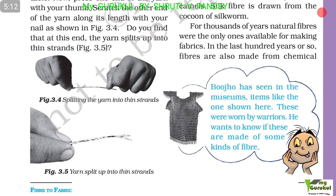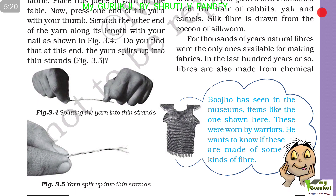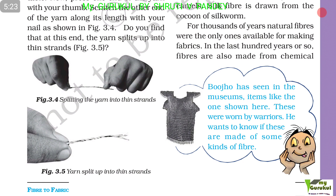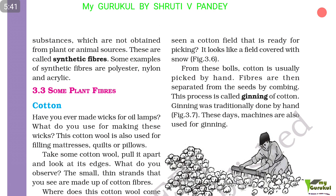Silk fiber is drawn from the cocoon of the silkworm. For thousands of years, natural fiber fabrics were the only ones available for making fabrics. In the last hundred years or so, fibers are also made from chemicals. Substances which are not obtained from plant or animal sources are called synthetic fibers. Some examples of synthetic fibers are polyester, nylon, and acrylic.